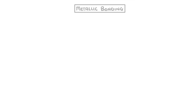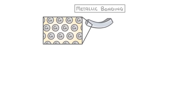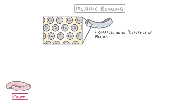In this video, we're going to take a look at metallic bonding, which is the type of bonding you get between metal atoms. We'll see how this gives rise to the characteristic properties of metals, and lastly we'll consider how alloys differ from pure metals.